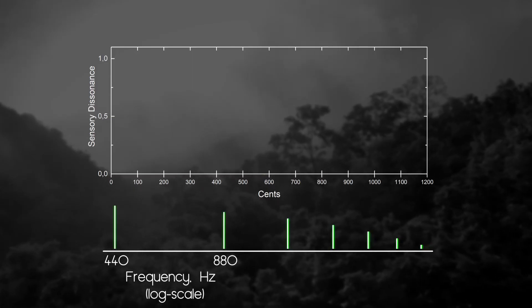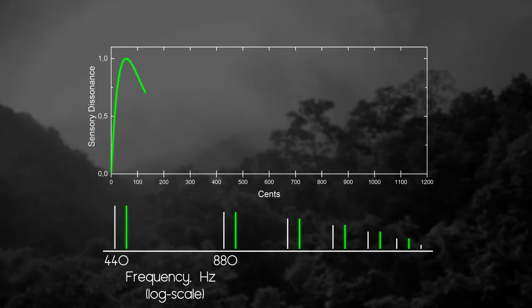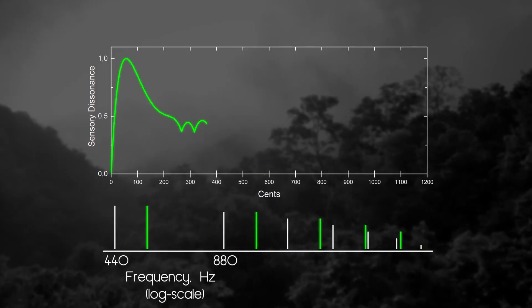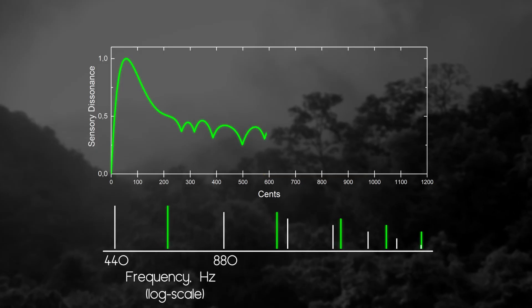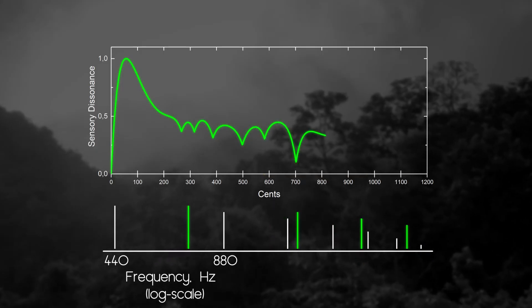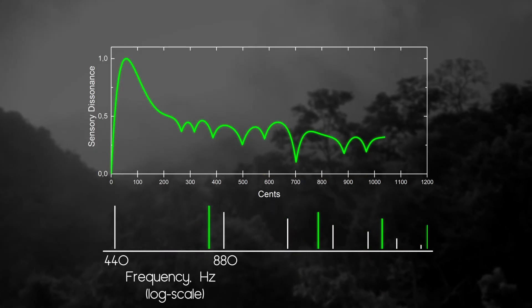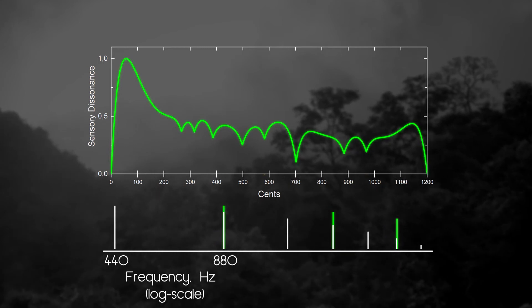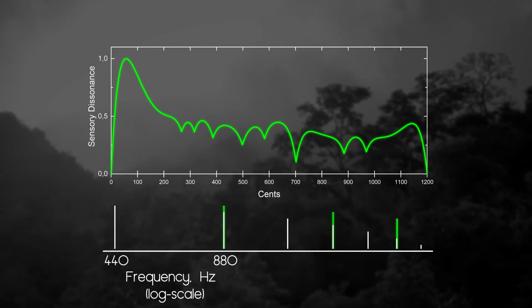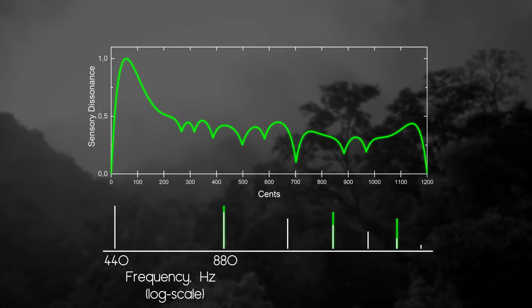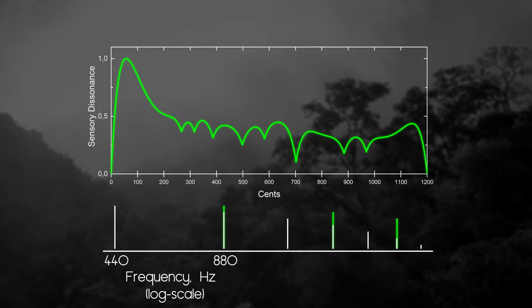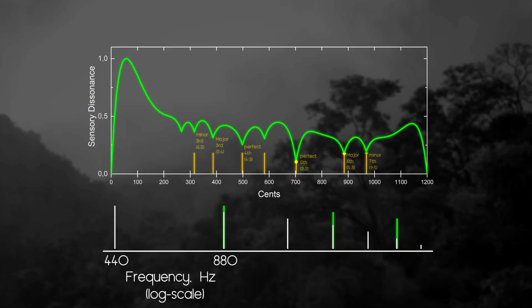One spectrum will be static and another will sweep all frequencies in the span of one octave, while we sum contributions to dissonance from every pair of sine waves in both spectrums. And we will get this graph that has many dips in dissonance. They happen in places where partials of a sound coincide, thus reducing overall dissonance and mark the notes of just intonation.